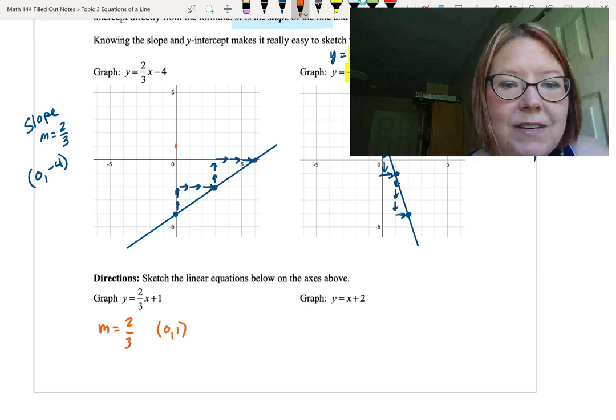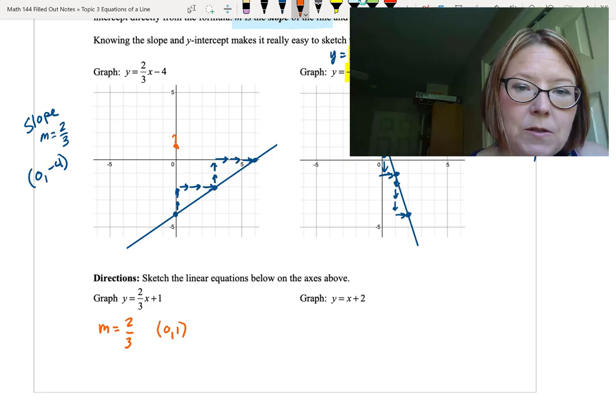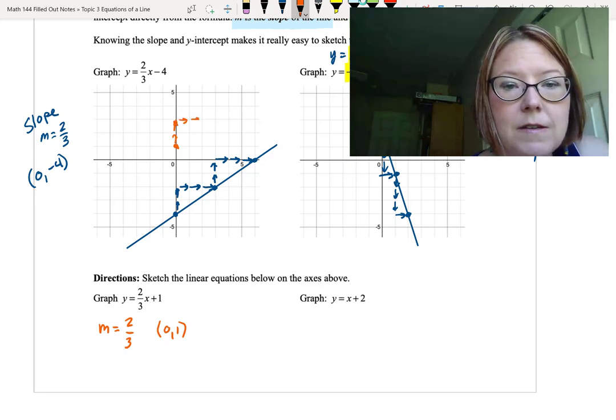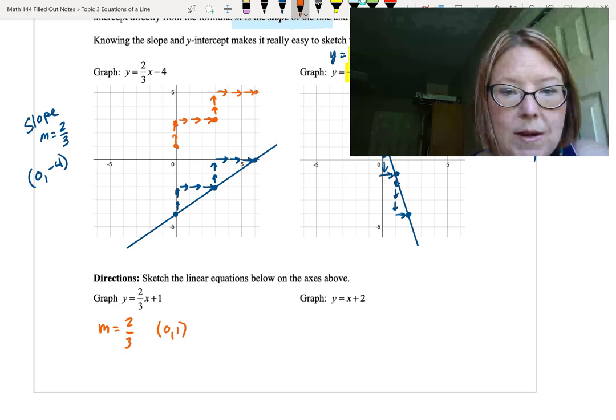We're going to graph y equals two-thirds x plus 1. This has a slope of two-thirds, so it's a rise of 2 and a run of 3 and a y-intercept of 0 comma 1. Let's start by graphing 0 comma 1 and then rise 2 from that, so up 2 and to the right 3. Rise 2, 1, 2, and to the right 3.